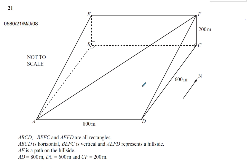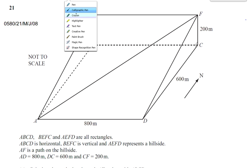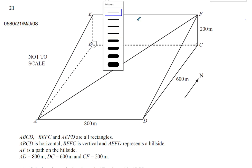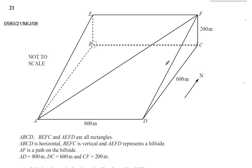They tell us that ABCD, BEFC, and AEFD are all rectangles - that's important. Since they're all rectangles, the opposite sides are equal and parallel, and all the angles are 90 degrees, as some are already marked. ABCD is horizontal, BEFC is vertical, so those angles are 90 degrees, and AEFD represents a hillside, so it's sloping upwards.